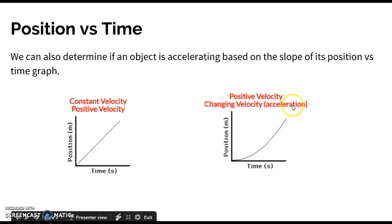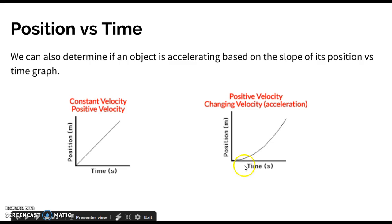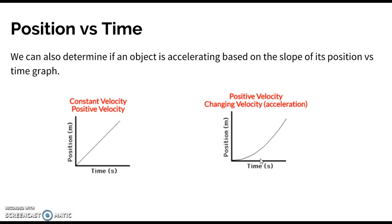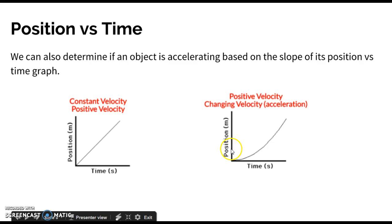Conversely, a changing slope means velocity is changing, so the object is accelerating. This situation on the right is actually accelerating positively. When the curvature is concave up, it's positive acceleration; if the curvature is concave down, it's negative acceleration. A quick way to think about it: concave up looks like part of a smiley face — positive acceleration. Concave down looks like a frowny face — negative acceleration.